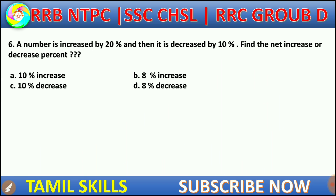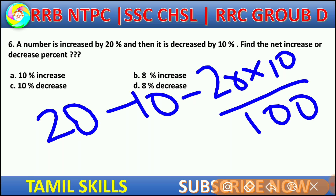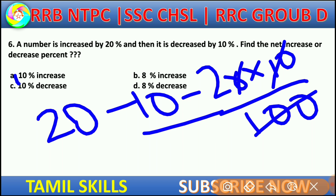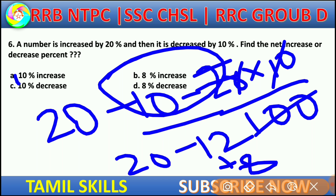Another question: A number is increased by 20% then decreased by 10%. So we use plus 20 and minus 10. Applying the formula: 20 minus 10 minus (20 × 10) by 100 gives plus 8. So the net result is an increase of 8%.